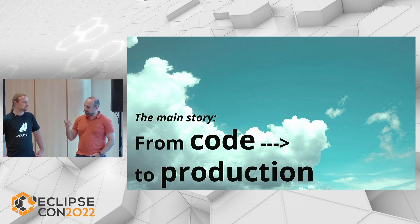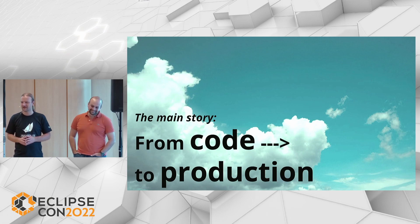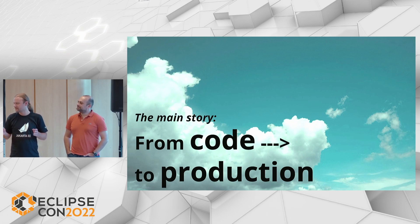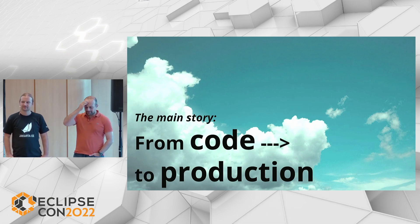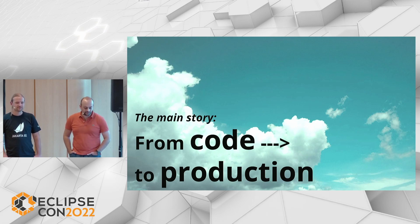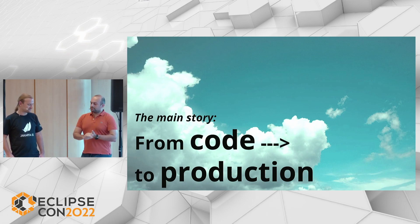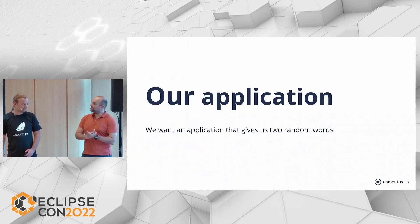We start with something simple, but before we go any further, we should introduce ourselves. My name is Mats. I'm from Norway, working at a Norwegian consultancy company called Komputas — mainly a Java developer, some Kotlin, some front-end on good days. And with me I have Rustam. My name is Rustam. I work together with Mats at Komputas, also from Norway, Oslo. I am a Java Champion and also a Google Developer Expert for cloud.